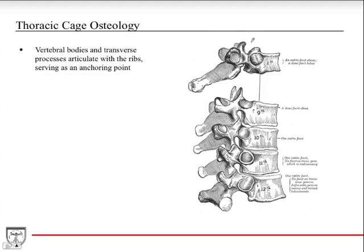Here's a sagittal view of the vertebral bodies. You have the transverse processes here, and these form an articulation with the rib. On the body, there's an articulation structure that serves as an anchoring point. The ribs shoot off of the body, they articulate with the transverse process, which stabilizes them, and then they wrap around and join with the sternum anteriorly. Importantly, the rib articulates with the thoracic vertebrae twice — both on the body and at the transverse process.